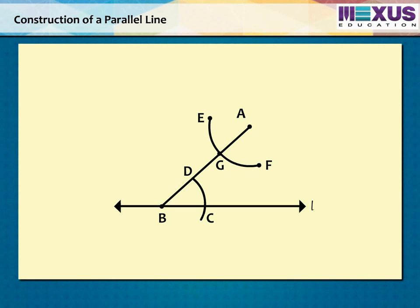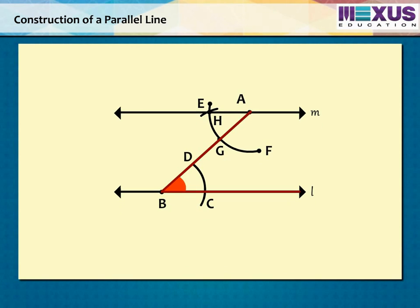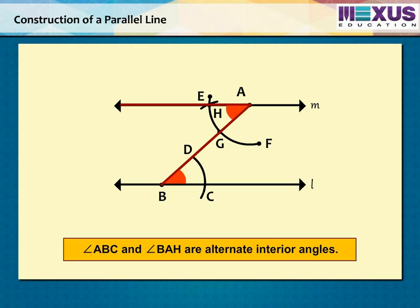Place the pointed tip of the compass at C and adjust the opening so that the pencil tip is at D. With the same opening as in step 5 and with G as center, draw an arc cutting the arc EF at H. Now join A-H to draw a line M. Here angle ABC and angle BAH are alternate interior angles. Therefore, M is parallel to L.